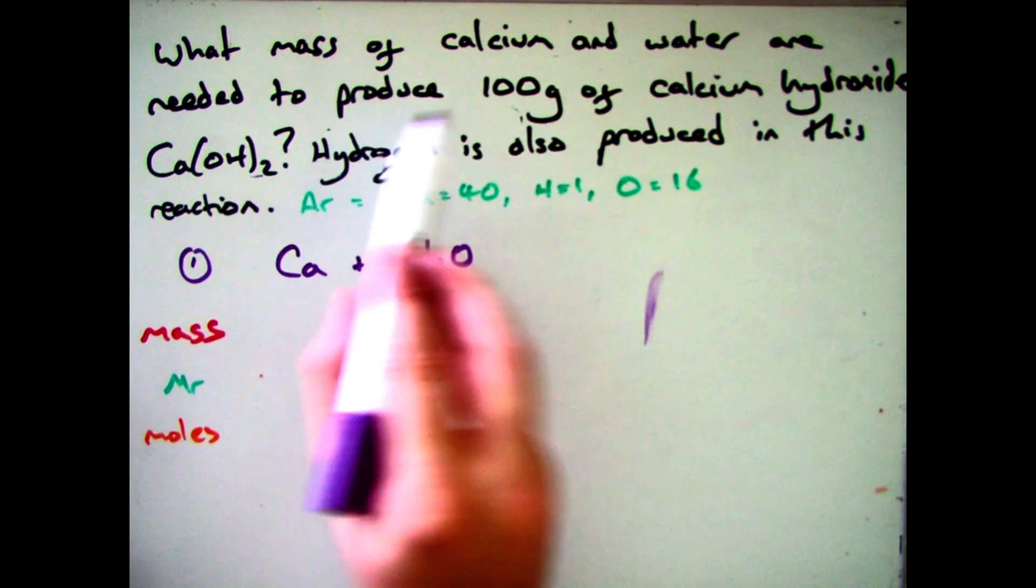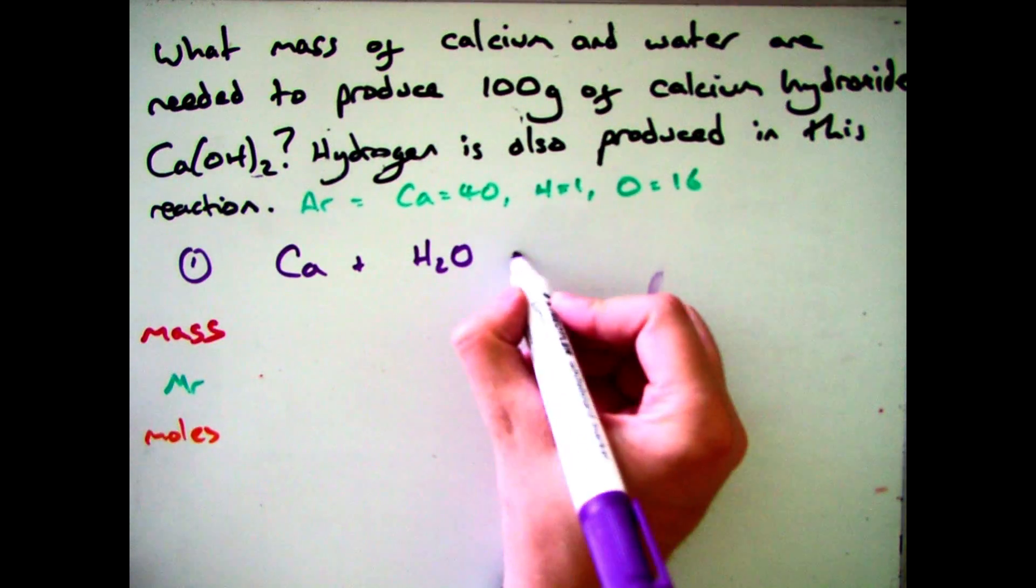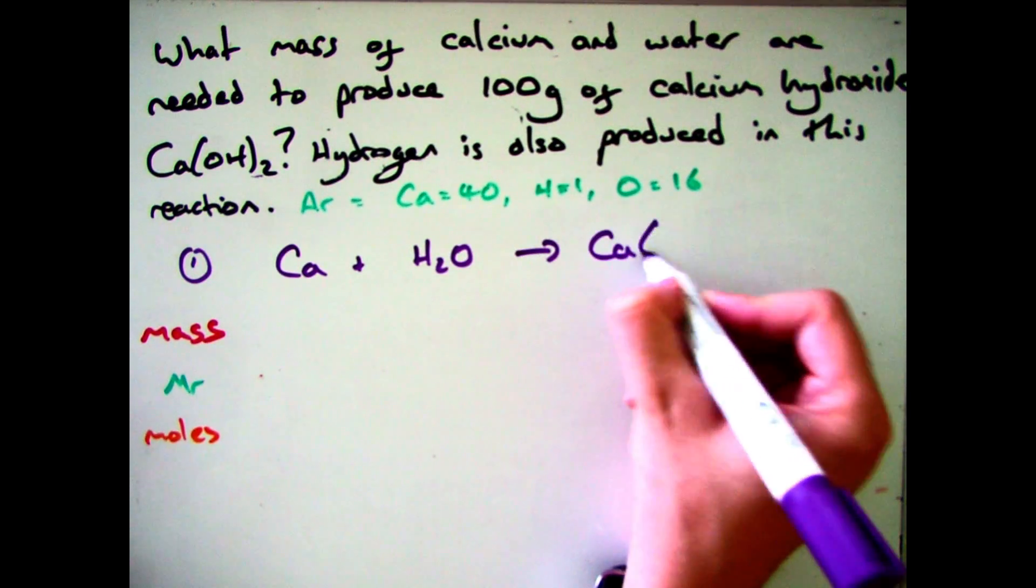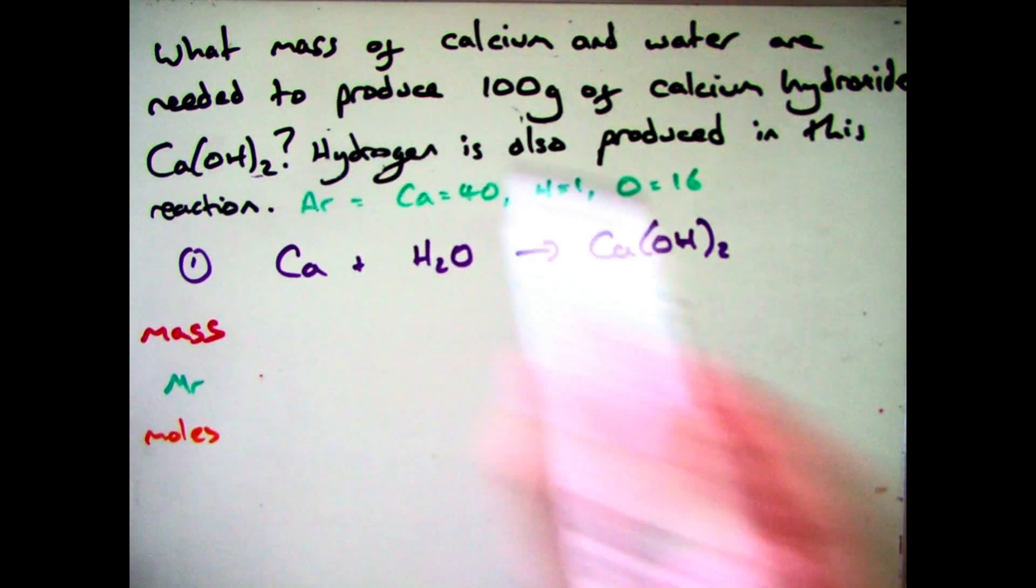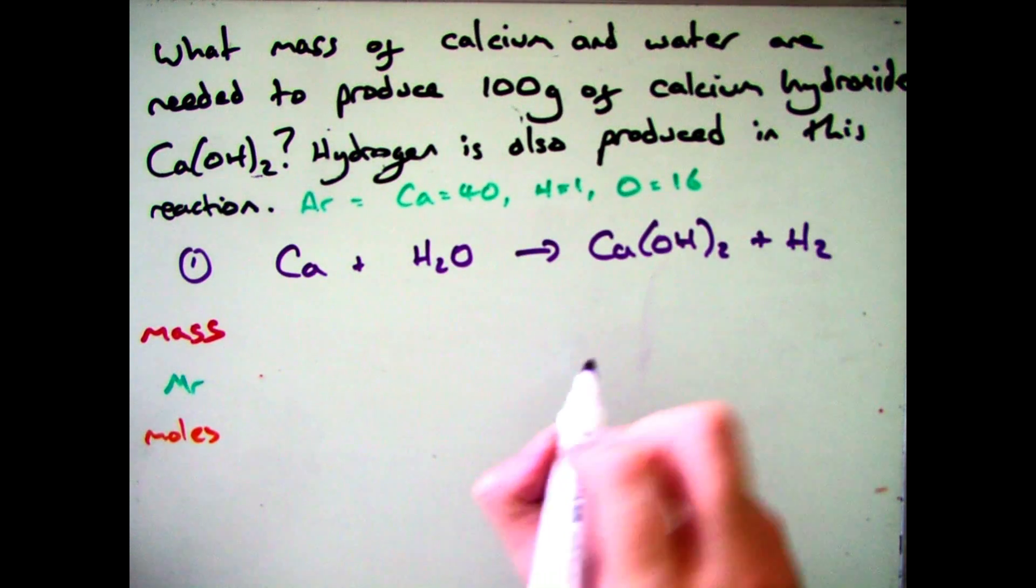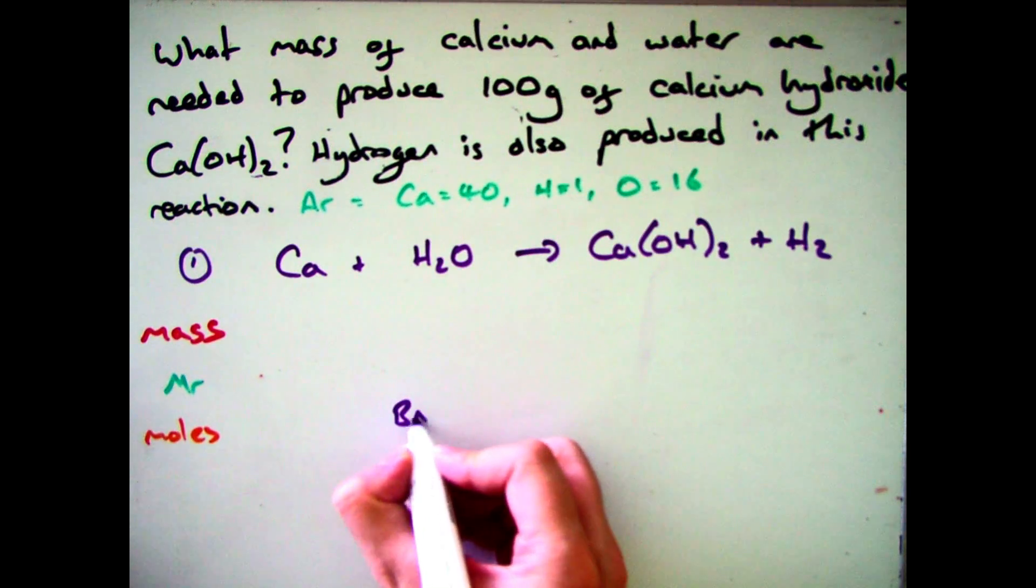So your very first step is to write out your balanced equation. So we know calcium is Ca, we know water is H2O. It gives us calcium hydroxide Ca(OH)2 and we know hydrogen is H2. If you can't remember that just remember it's a gas and it's diatomic.